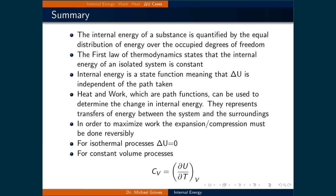We covered a lot of ground in this lecture, and here are a couple of points to reiterate. The internal energy of a substance is quantified by the equal distribution of energy over the occupied degrees of freedom. The first law of thermodynamics states that the internal energy of an isolated system is constant. The internal energy is a state function, meaning that changes in internal energy are independent of the path taken. Heat and work, which are path dependent and are called path functions, can be used to determine the change in internal energy and represent transfers of energy between the system and the surroundings. To maximize work of an expansion or compression process, it must be done reversibly. For isothermal processes at constant temperature, the change in internal energy is equal to zero. And for constant volume processes, the heat capacity at constant volume is just the change in internal energy with respect to temperature at constant volume.